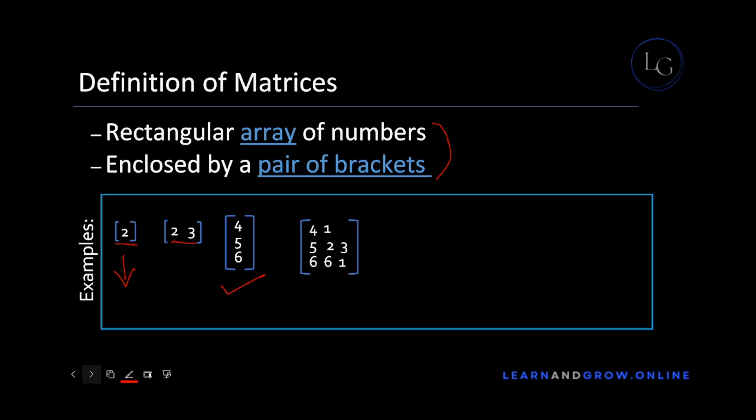In this next example we have all elements present except for one. Since an element is missing, this will no longer be a rectangular array of numbers. It is enclosed by a pair of brackets but it is not fulfilling one of the requirements, hence it is not a matrix.